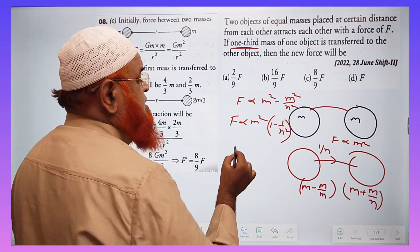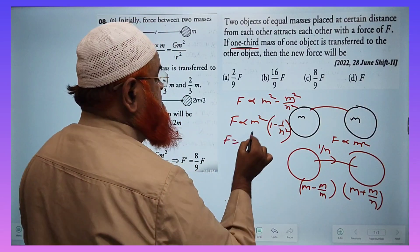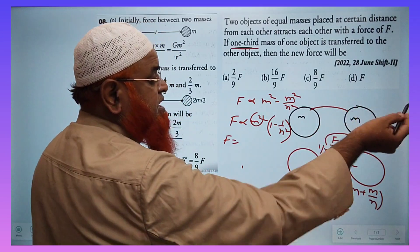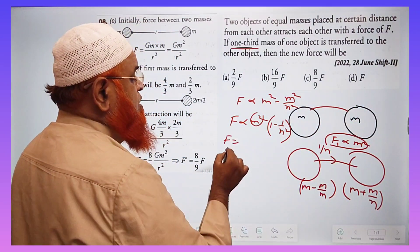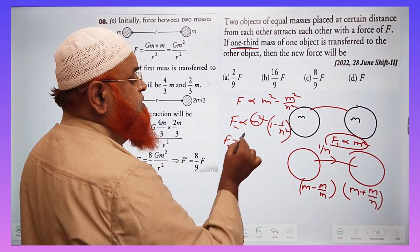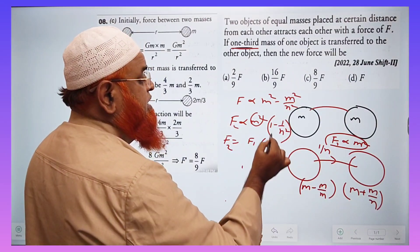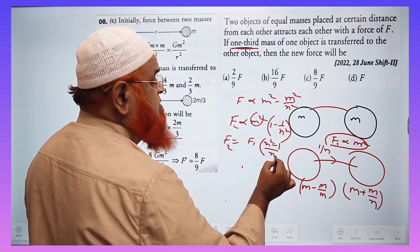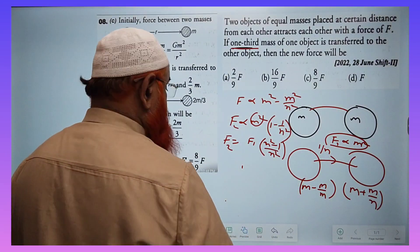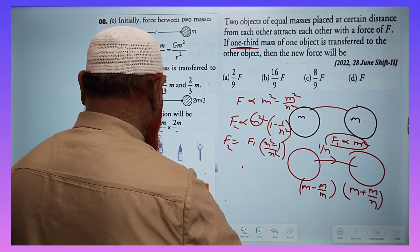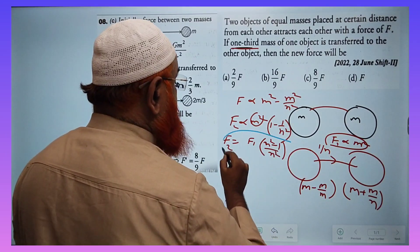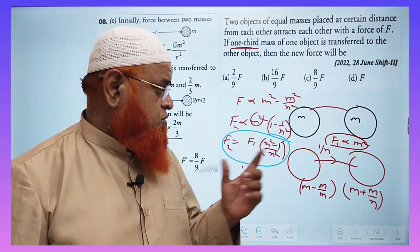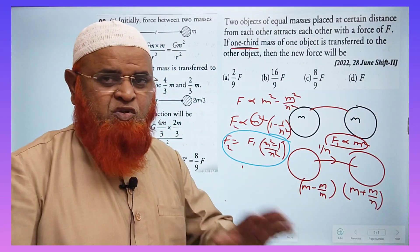Therefore, f1 is directly proportional to m squared previously, and now f2 is equal to f1 times (n squared minus 1) divided by n squared. This is your shortcut formula: f2 equals f1 times (n² − 1) / n². Using this shortcut you can solve any problem — whether one-third, one-fourth, or one-fifth of the mass is transferred.